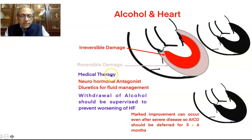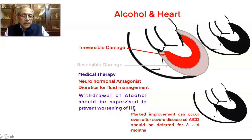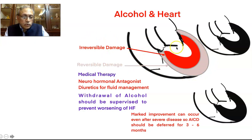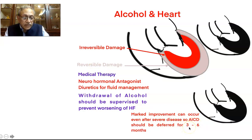What is the treatment? The medical treatment is the same as that of congestive cardiac failure — that is, neurohormonal antagonists, diuretics for fluid management. And the most important part is that withdrawal of alcohol should be supervised to prevent worsening of the heart failure treatment. This is important because of the reversible damage which occurs in patients apart from the irreversible damage. We still have a good scope to prevent and reverse the changes of cardiomyopathy with alcohol, and marked improvement can occur even after severe disease. So AICD should be deferred for at least 3 to 6 months of complete abstinence from alcohol.